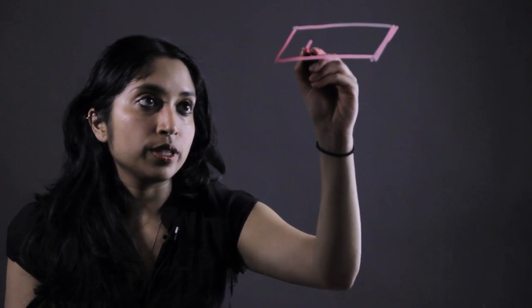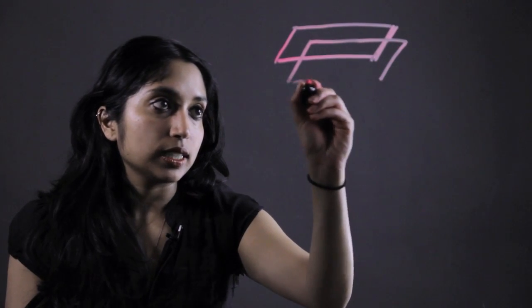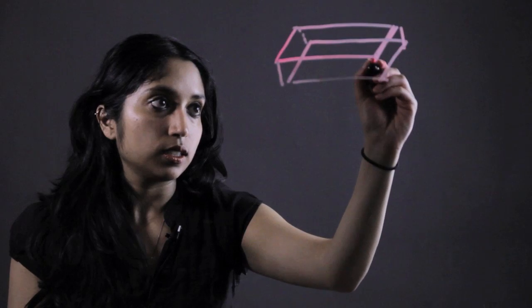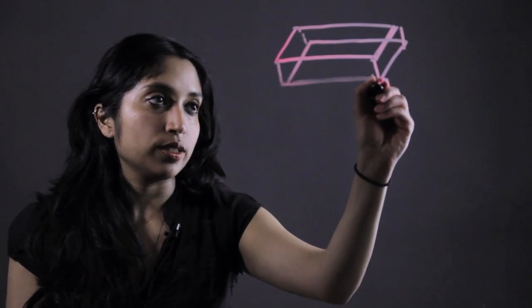So I'm going to draw a very familiar polyhedron. It's just going to be a box. Connect these lines. This right here is a polyhedron.